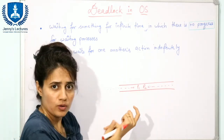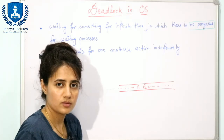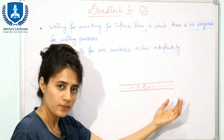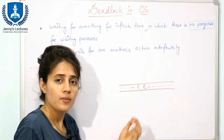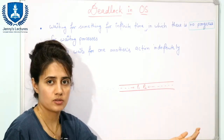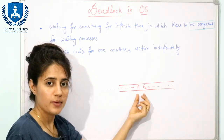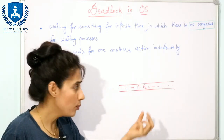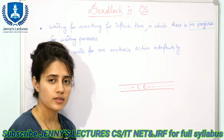Here you can take P1 and P2 as processes, and this street is a resource. P1 is waiting for this resource to be free, and P2 is also waiting for this street to be free. Both processes are waiting for a resource which is held by another waiting process, so there is no progress. They will wait for an infinite amount of time.